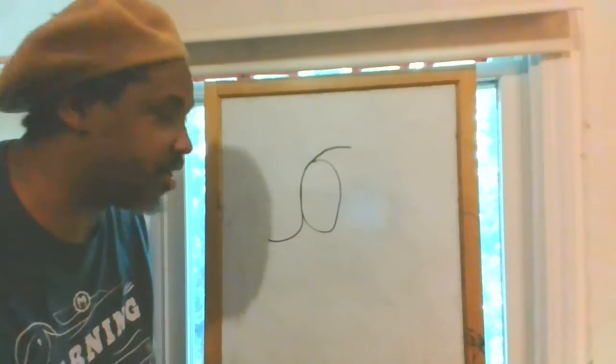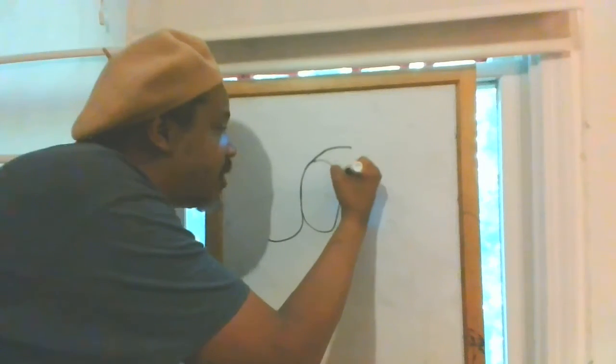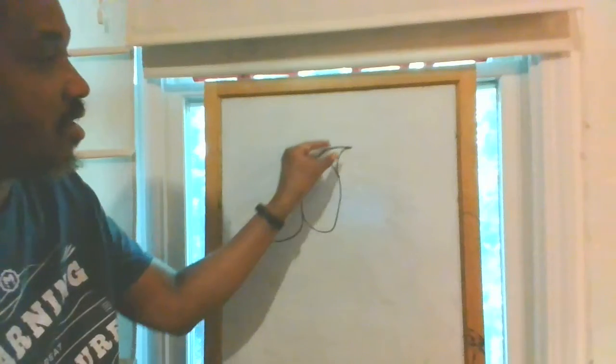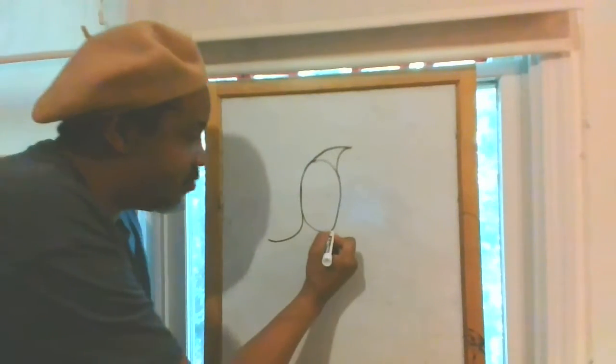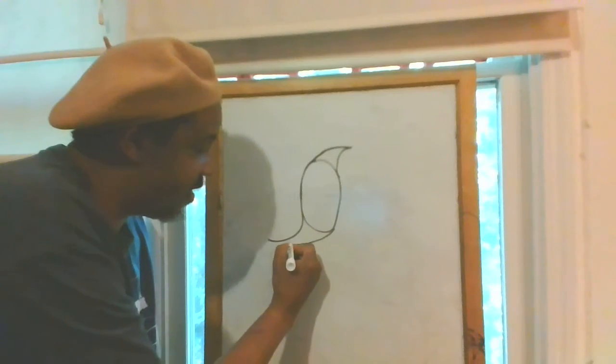Then we're gonna go around here on this side and connect that to there. Now, using shapes and lines—remember, that's how we're doing this—using shapes and lines, I'm gonna do another oval here.